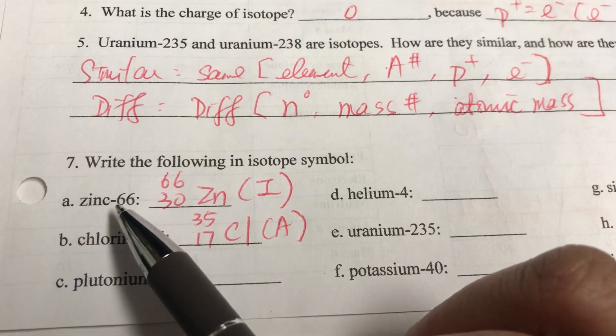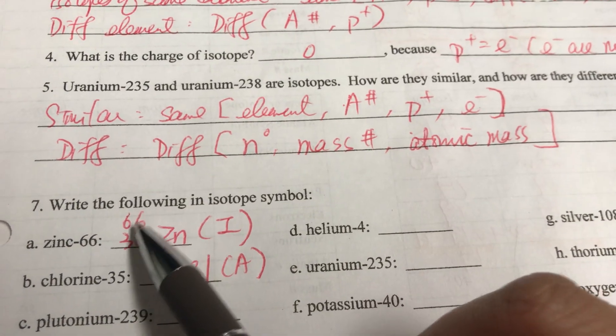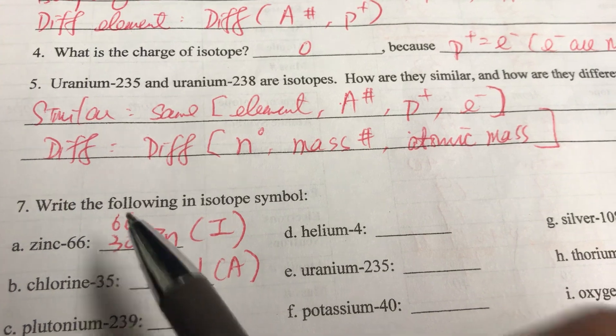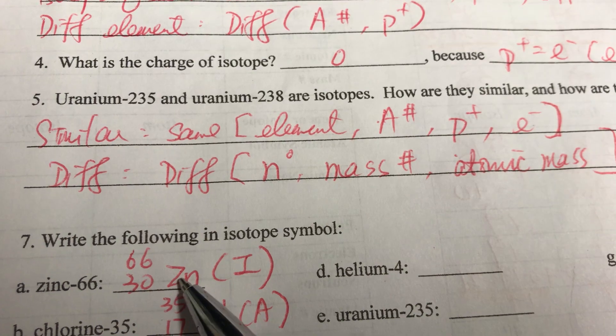So, for example, if you look up here, alright? The zinc is 66, so we're going to write 66 on top and the atomic number is 30. The atomic number is 30 for zinc.